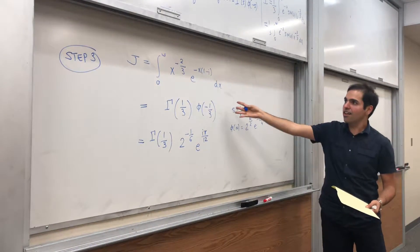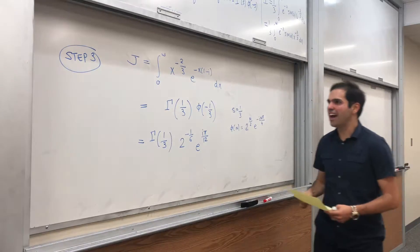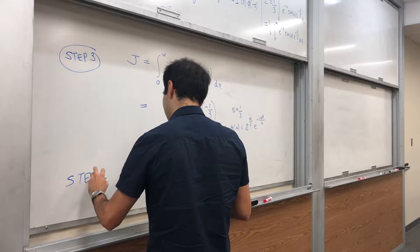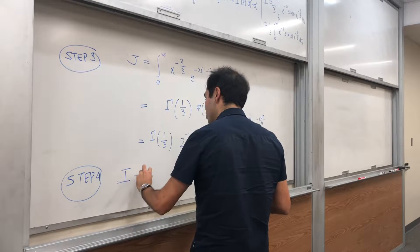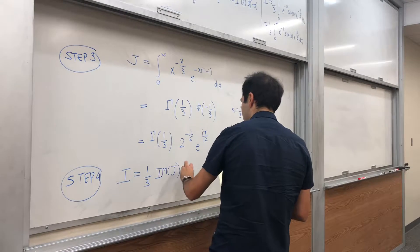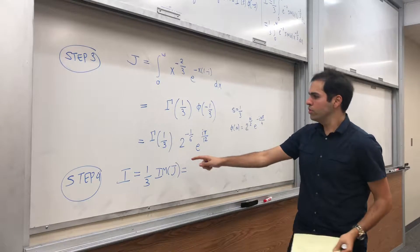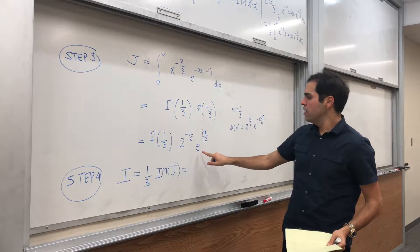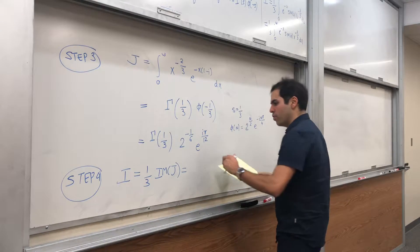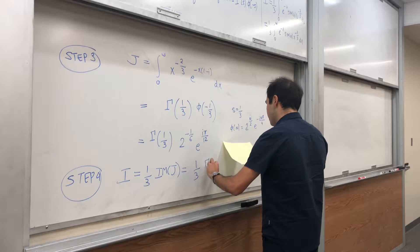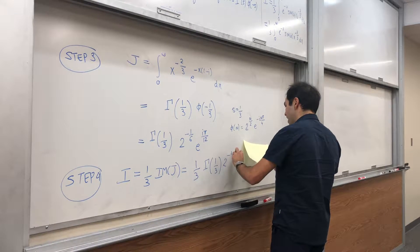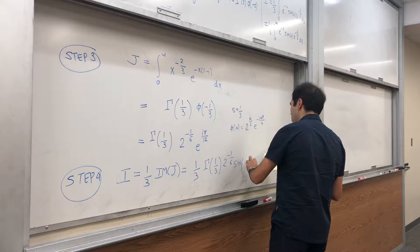We calculated J, so all we need to do is calculate I. Last step: I is just one-third times the imaginary part of J. The factor gamma of one-third and 2 to the minus one-sixth are real; e to the i pi over 12 is just cosine of pi over 12 plus i sine of pi over 12. So I is just one-third times gamma of one-third times 2 to the minus one-sixth times sine of pi over 12.